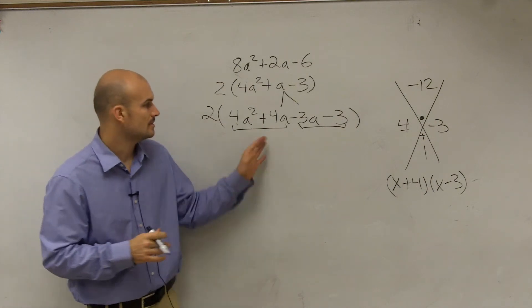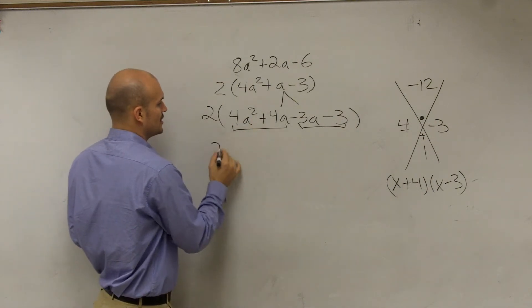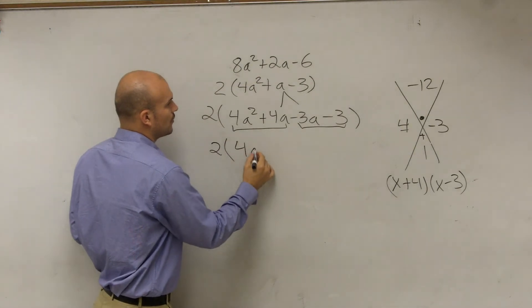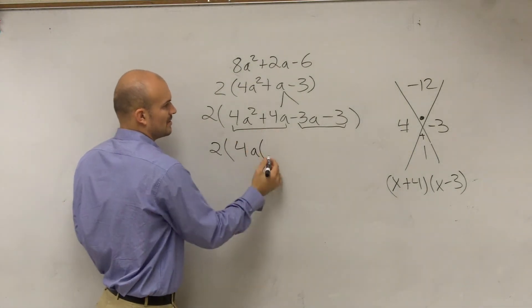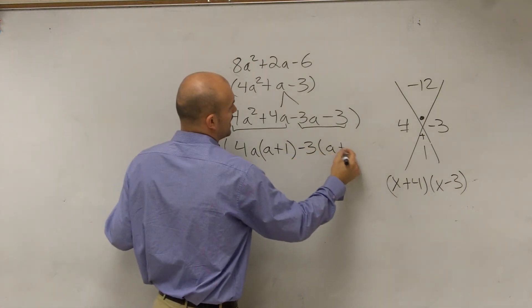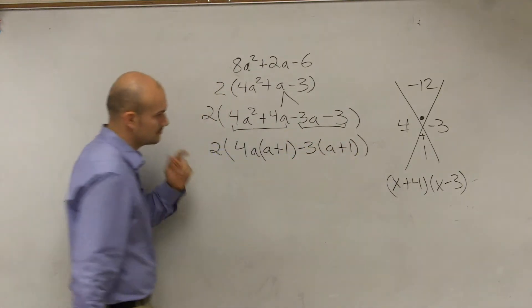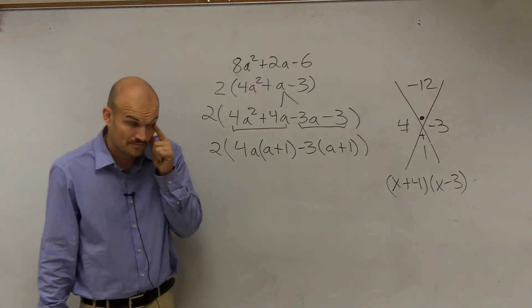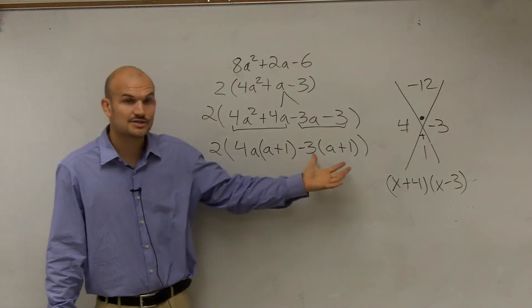Now the reason why I did this is so now I can use factoring. So therefore, now I can factor out my term, so I can factor out a 4a, which is going to leave me with an a plus 1. Here I can factor out a negative 3, which leaves me with an a plus 1.